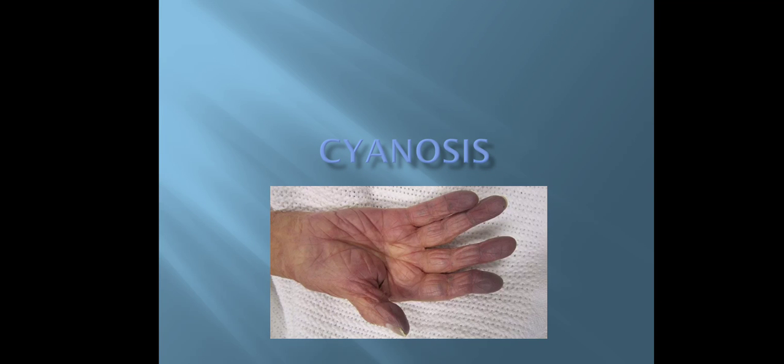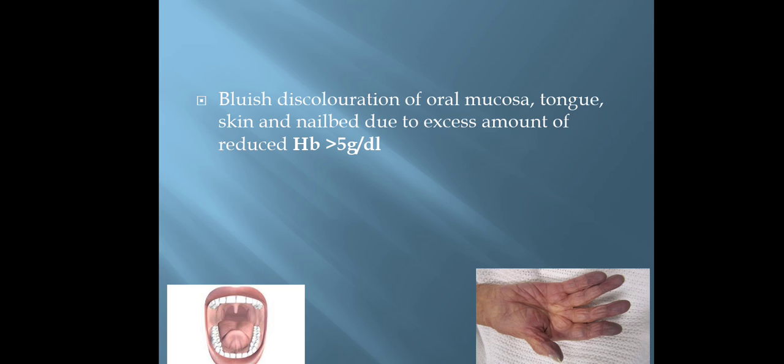Hello all, today we are going to discuss about Cyanosis. It is an important sign in the general physical examination. Cyanosis is the bluish discoloration of oral mucosa, tongue, skin, and nail bed due to excess amount of reduced hemoglobin more than 5 gram per deciliter.